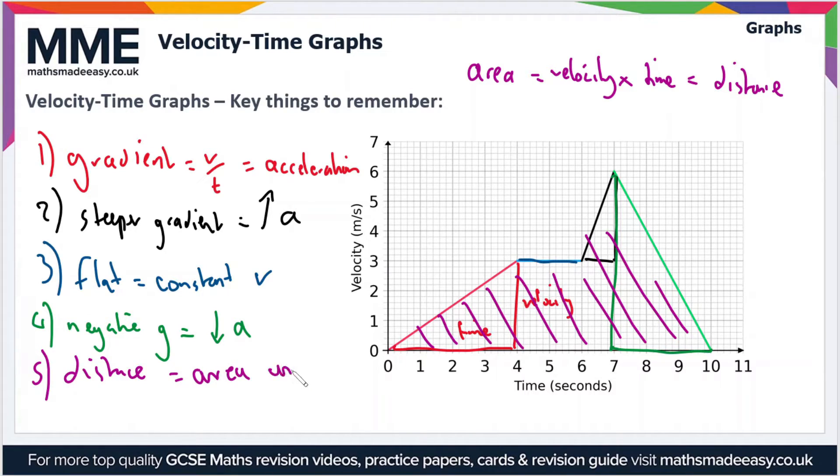The final point, point number five, is that the area under the graph—that's the entire area here which I'm highlighting in purple—is given by velocity times time, which, if you know your formula, is equal to distance traveled. So distance equals area under the graph.